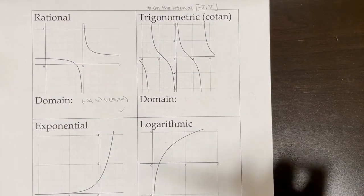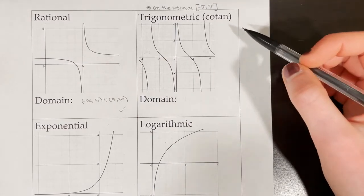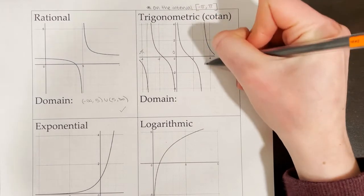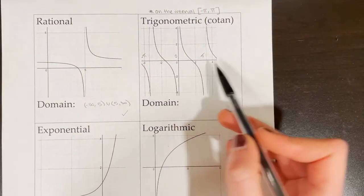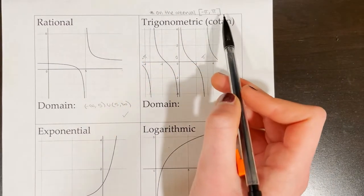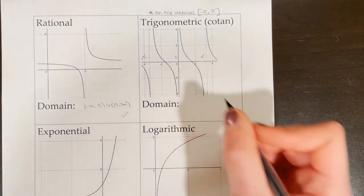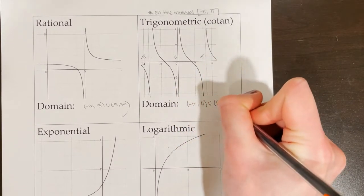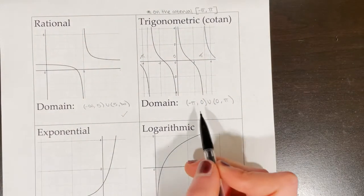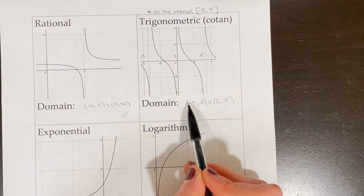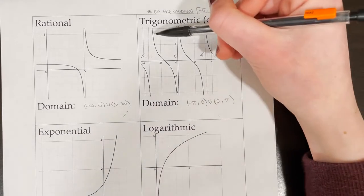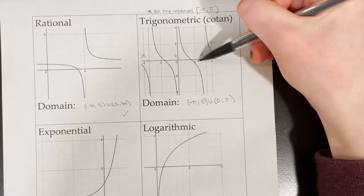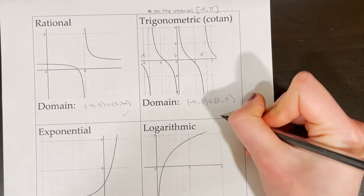To find the domain of a trigonometric graph — in this case a cotangent graph — we first identify the vertical asymptotes. We have vertical asymptotes at negative pi, zero, and pi. We are only finding the domain on the interval from negative pi to pi. So the domain is open parenthesis negative pi to zero, close parenthesis, union zero to pi. The function is continuous everywhere on the section from negative pi to zero, and also on the section from zero to pi, so the cotangent graph is continuous on its domain.